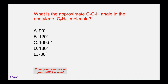Acetylene, also known as ethyne C₂H₂, is a type of alkyne from the organic chemistry section. The question asks: what is the approximate CCH bond angle in acetylene? Draw the Lewis structure and use the electron pair geometry to determine the approximate angle. Pause the video, work on it, and when you're ready, unpause it.